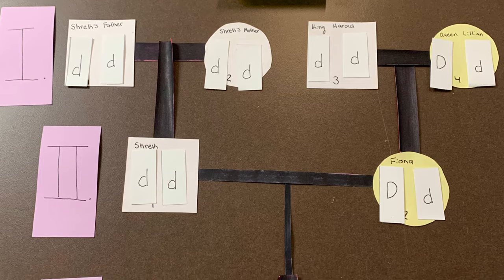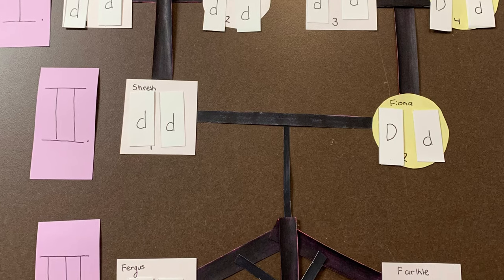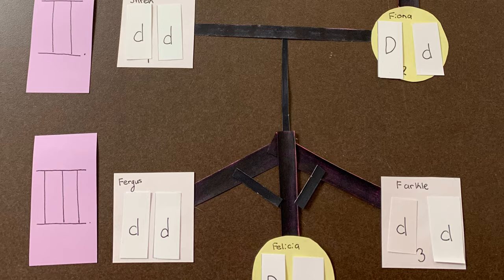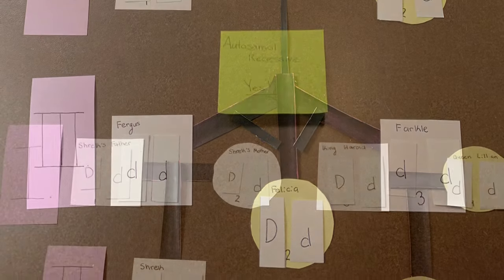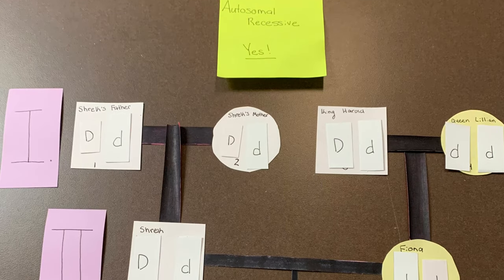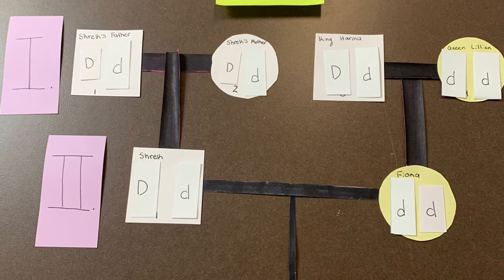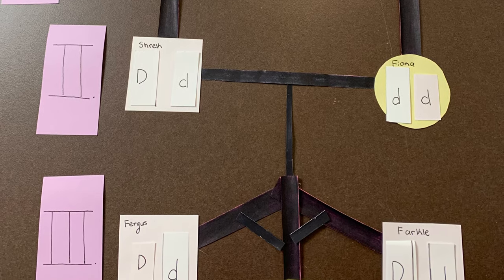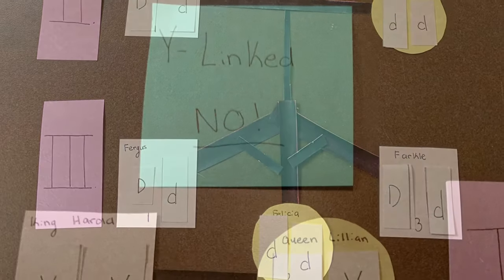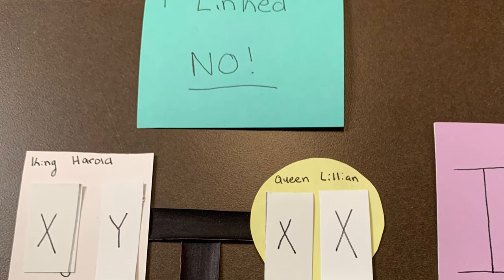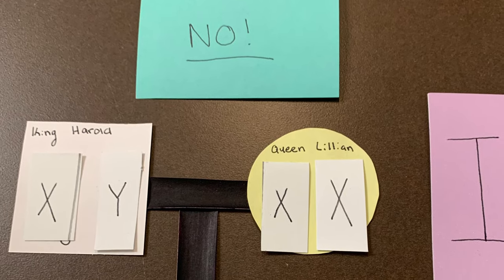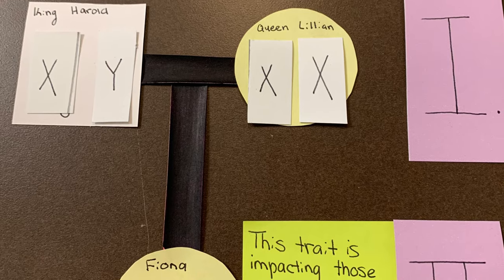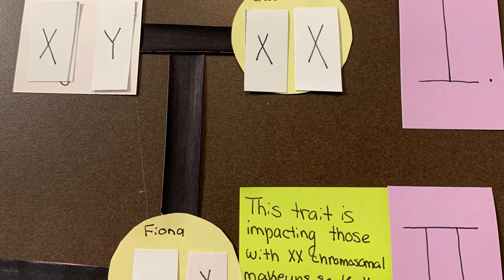Next, I found this pedigree is consistent with the autosomal dominant mode of inheritance. I also examined it and found that it was consistent with an autosomal recessive mode of inheritance. Finally, I examined whether this mode of inheritance could be Y-linked but found that it could not, because everyone who had the trait had two X chromosomes and no Y chromosomes.